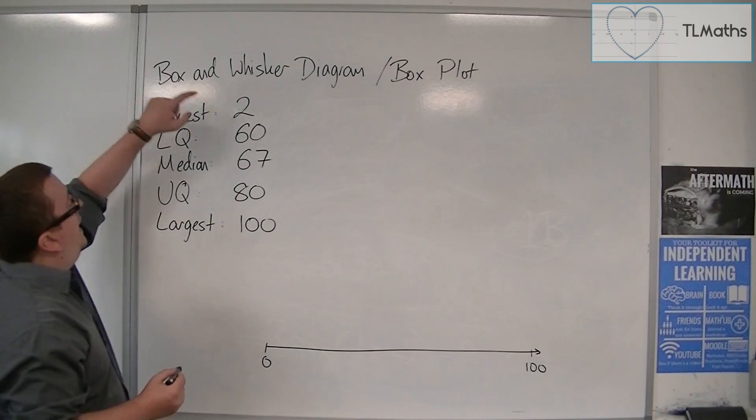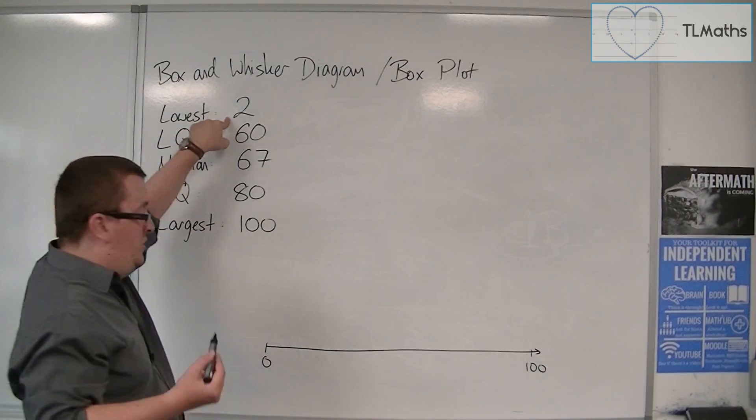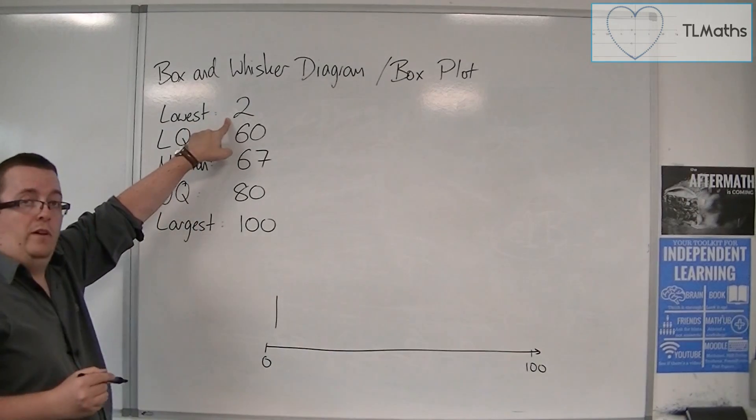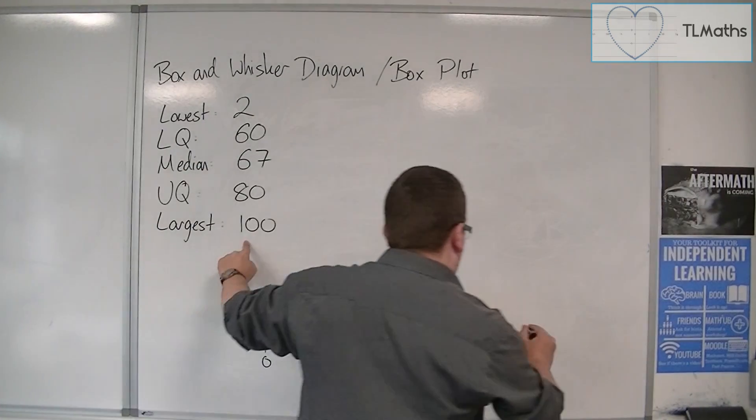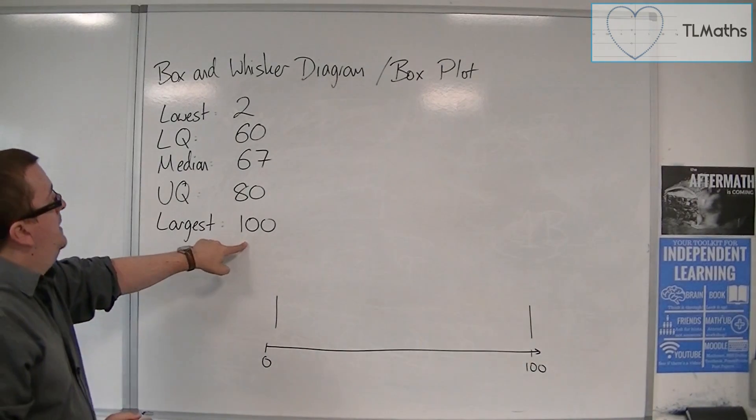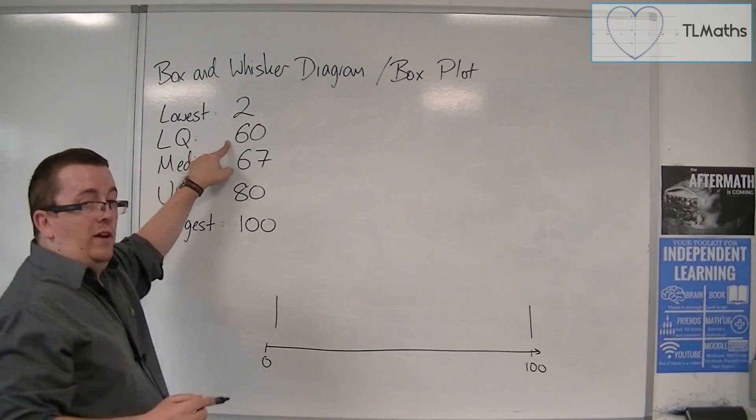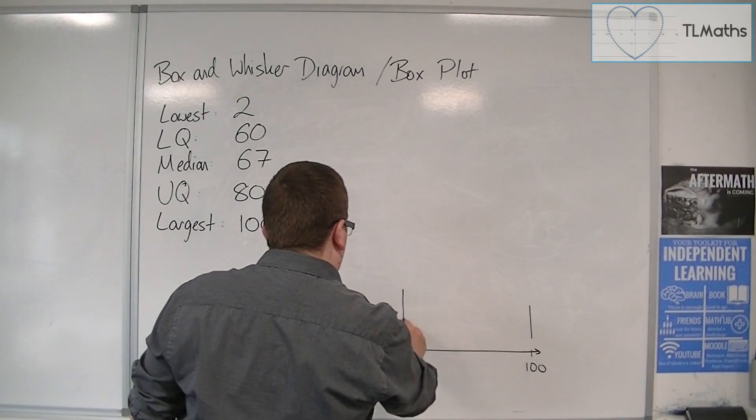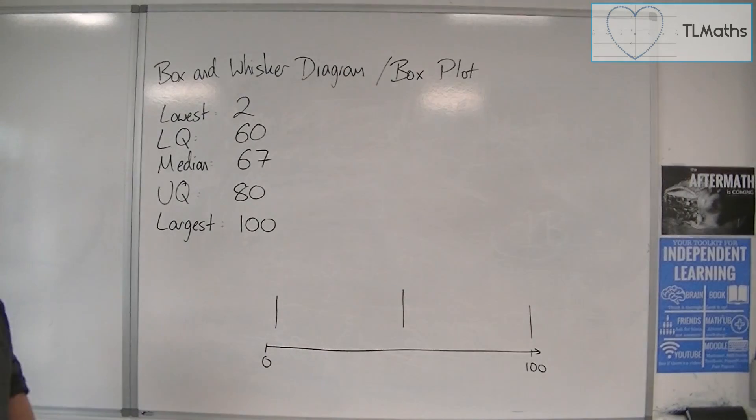So at its lowest point we're at 2, and we would draw a vertical line. And at its largest point we're at 100, and we would also draw a vertical line. And our lower quartile is at 60, so 60 is roughly about there, so we're going to draw another vertical line there.